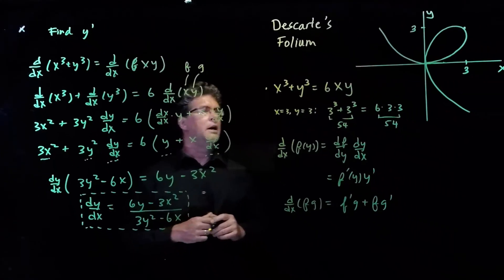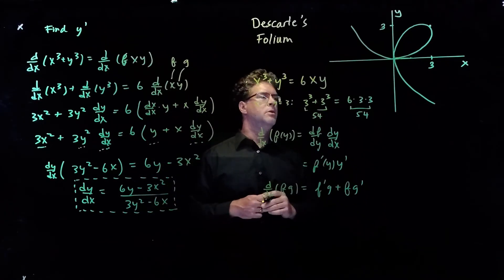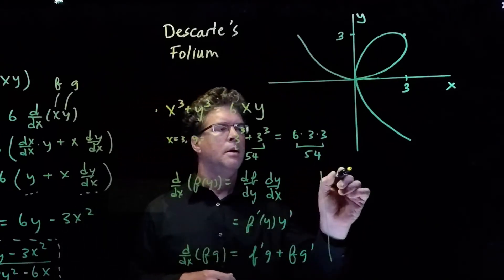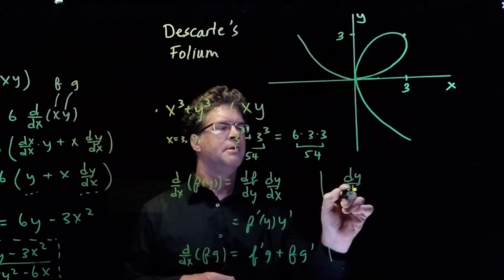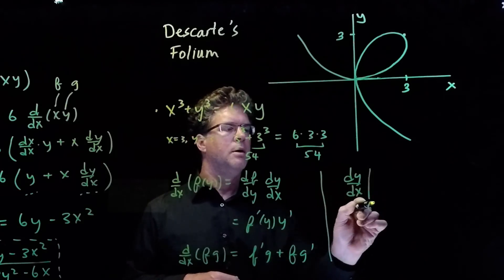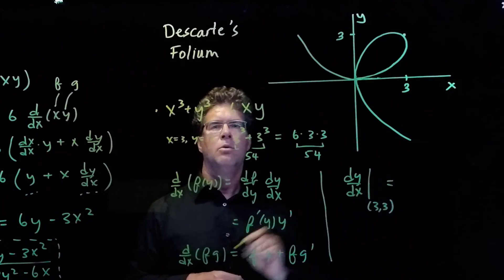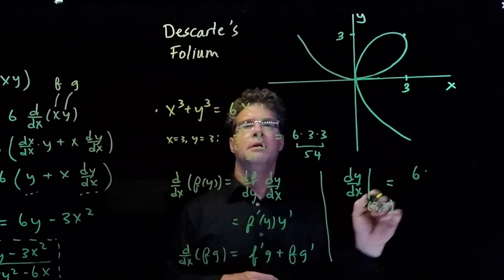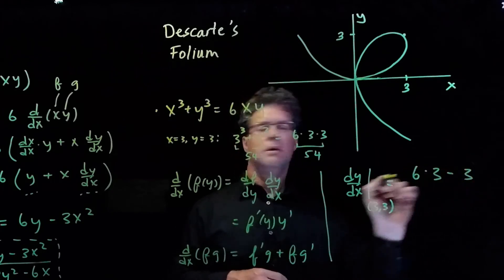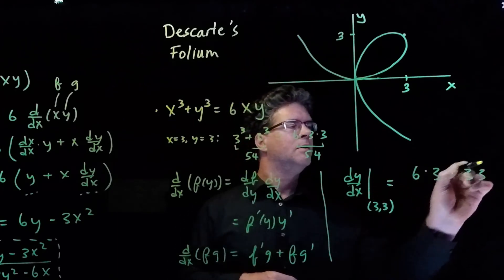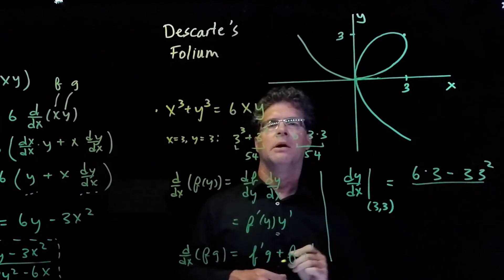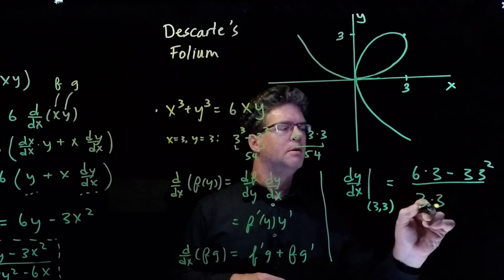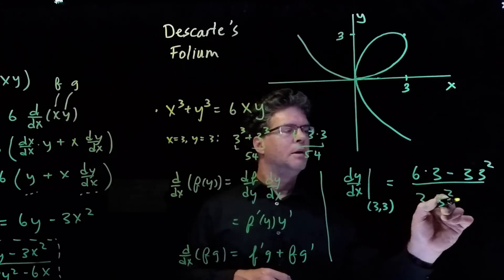So our tangent line will be at the point 3, 3. So dy/dx at the point 3, 3 will be equal to 6 times 3 minus 3 times 3 squared divided by 3 times 3 squared minus 6 times 3.